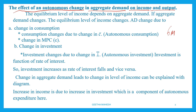First of all, what is the effect of an autonomous change in aggregate demand on income and output? What is national income? This is the total production of goods and services in the economy. What is the effect of an autonomous change? That is our national income. Aggregate demand is changing.